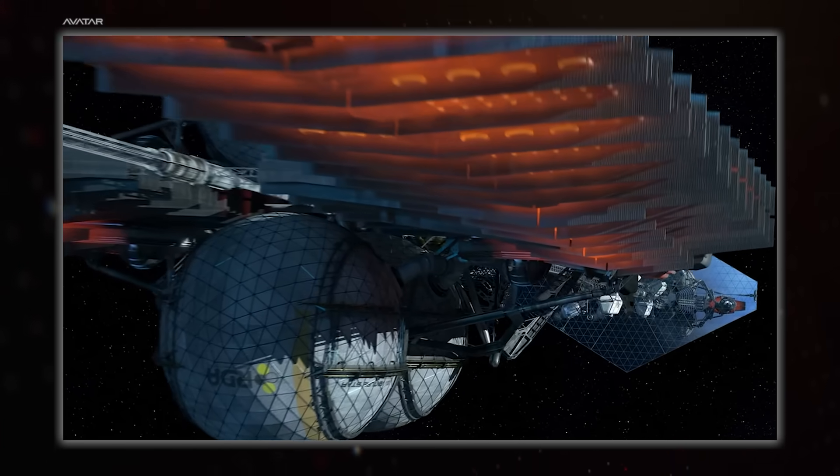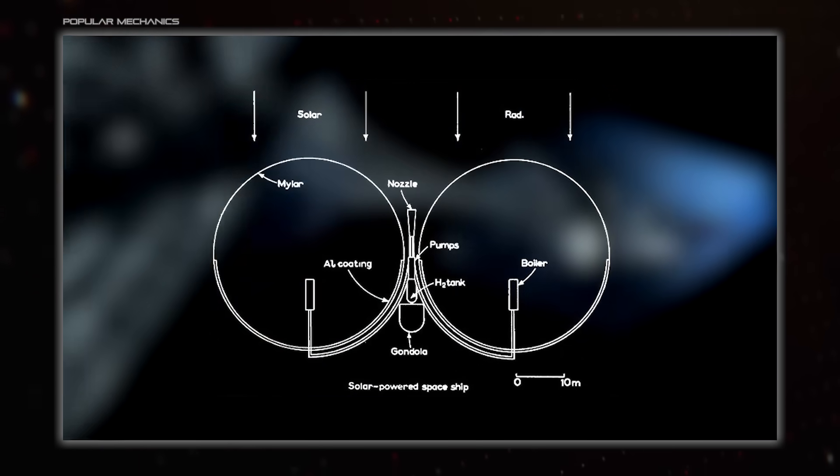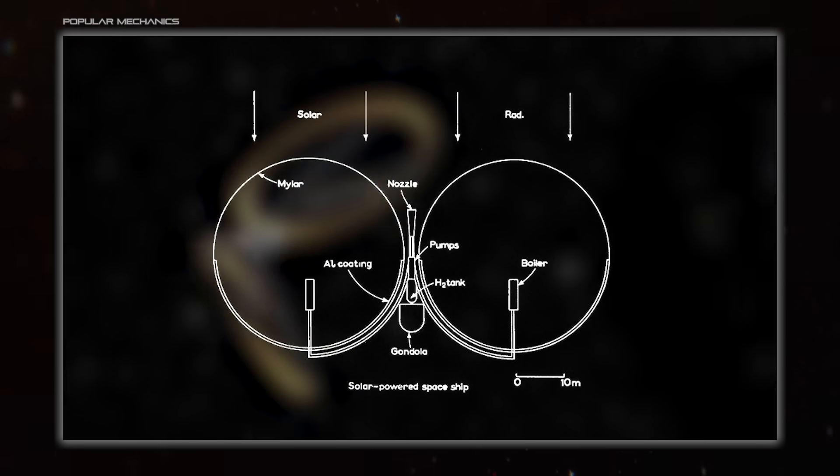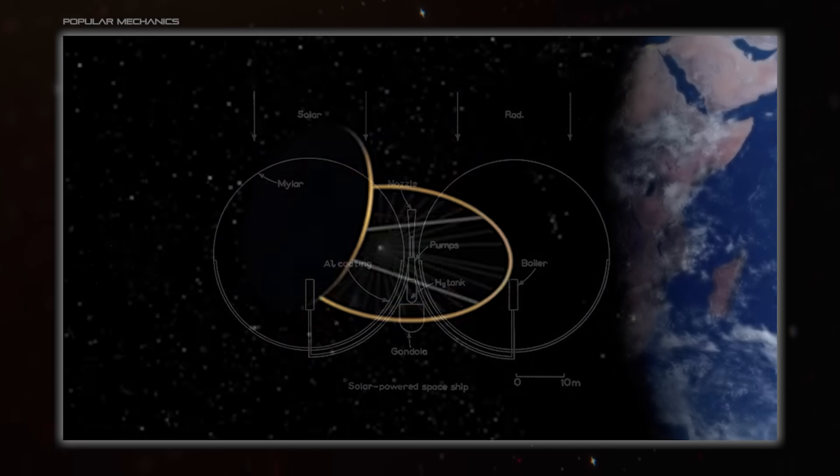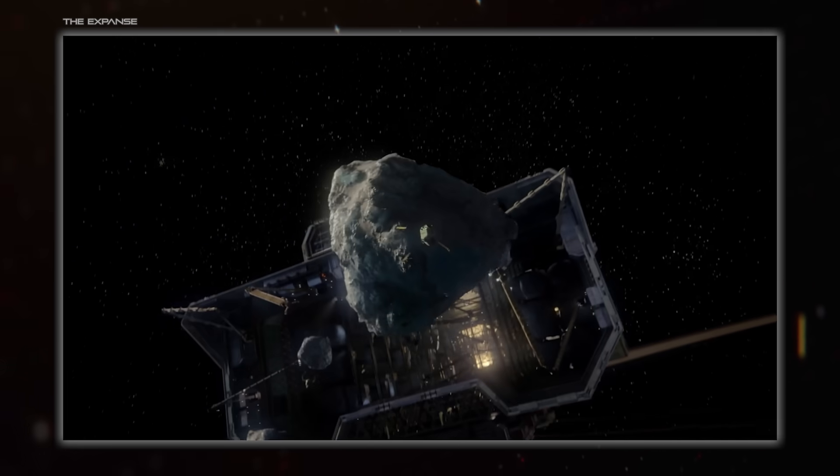You can also use the energy to directly heat up a propellant like water. As it boils, it turns to steam and expands, which can be directed through a nozzle to make a thruster. It's not super efficient, but that matters way less when you can just mine water ice from asteroids.